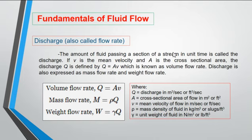Here are some of the fundamental concepts and terms we need to know to analyze fluid flow. Let's start with the discharge. The discharge is the amount of fluid passing a section of a stream in unit time. If V is the mean velocity and A is the cross-sectional area, the discharge Q is defined by Q equals A times V.